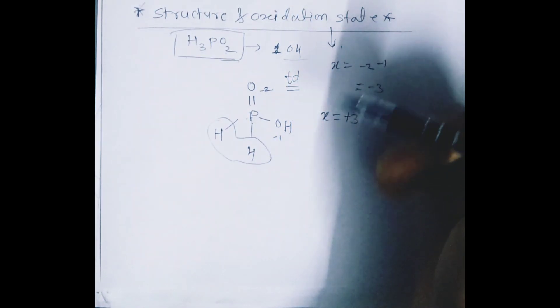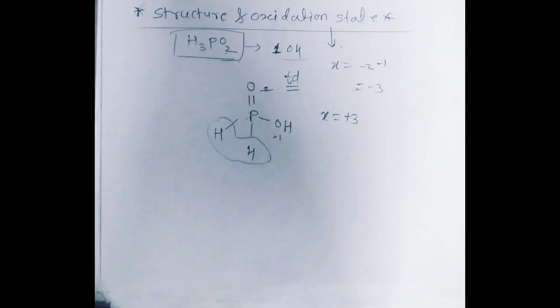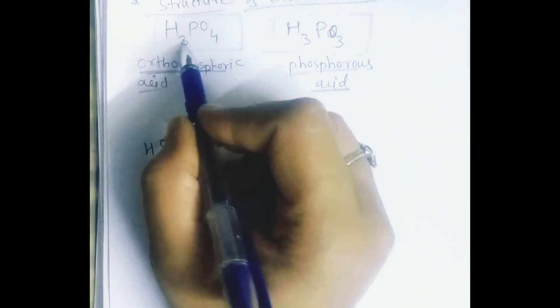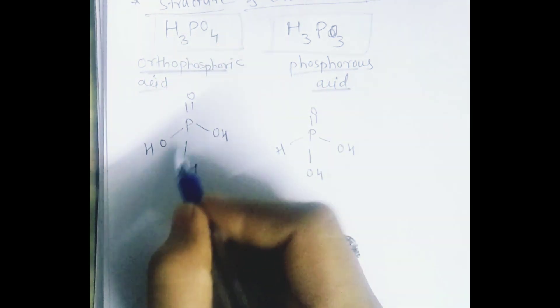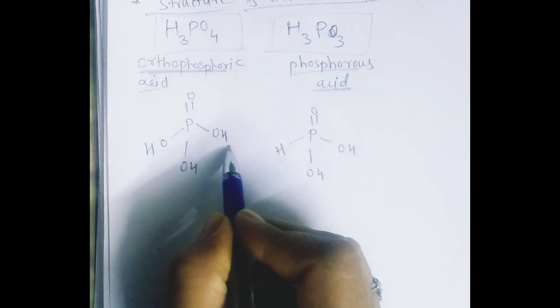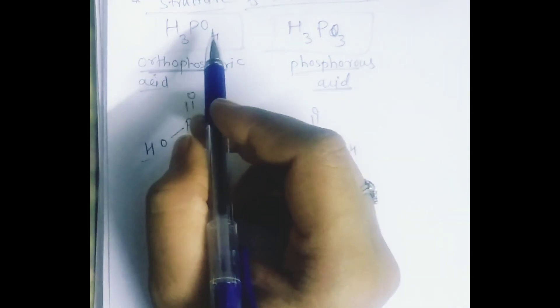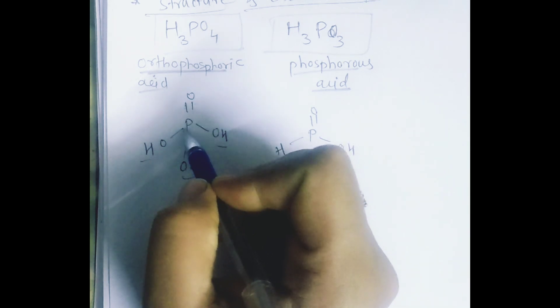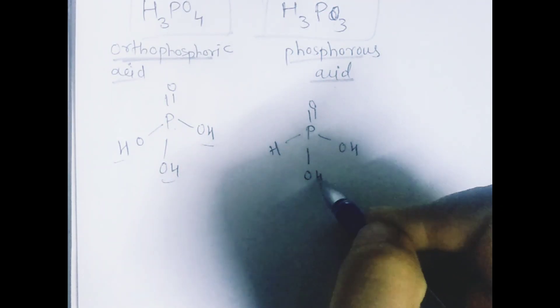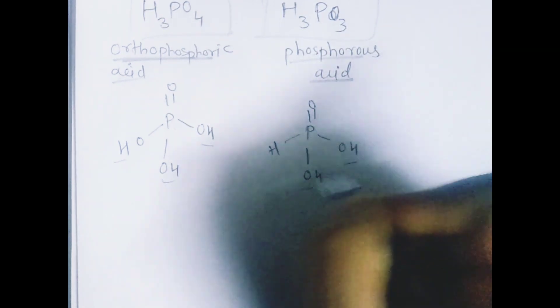Similarly, for ortho phosphoric acid and phosphorous acid: in phosphoric acid, three hydrogens are bonded through oxygen atoms, forming three OH groups, and one remaining oxygen is double-bonded to phosphorus. In phosphorous acid, one oxygen is double-bonded to phosphorus, and two oxygens are bonded with hydrogen atoms.